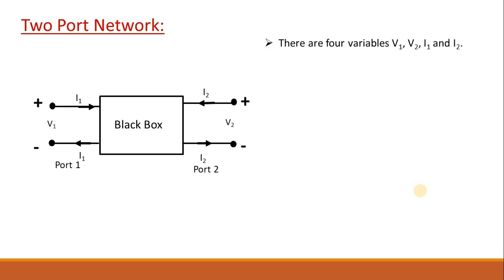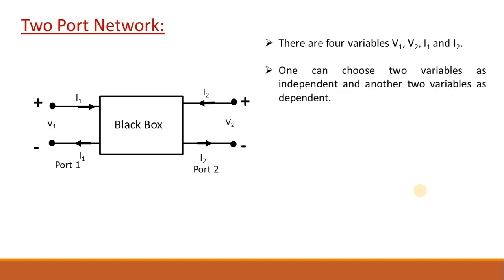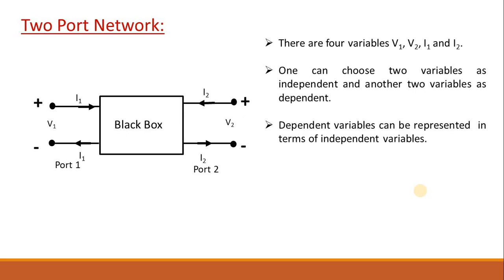There are four variables in a two-port network: two voltages at two different ports and two currents. Among these four variables, one can choose two variables as independent and another two variables as dependent. Thus, the dependent variables can be represented in terms of the independent variables through equations.